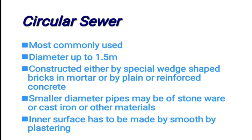For smaller diameter pipes, materials such as stoneware and cast iron are used. The inner surface has to be made smooth by plastering.